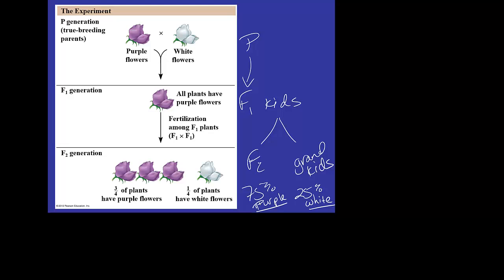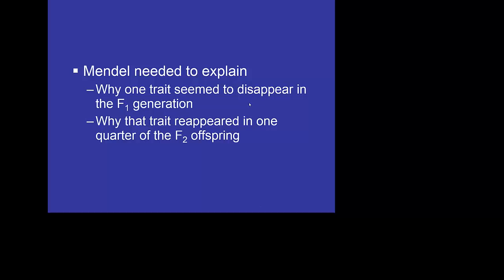We have to find, Mendel has to find some way to explain this weirdness that is going on. So he had to explain this disappearance of traits, so in the case I just showed you, the disappearance of the white flower and then why the white flower returns again in the F2 generation and we'll see it again in F3, the white flower will be present in F3. And so on and so forth, but it's this disappearance from the first generation and reappearance in the second generation that really throws everything for a loop for Mendel and he's got to figure out what's going on.